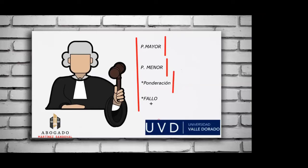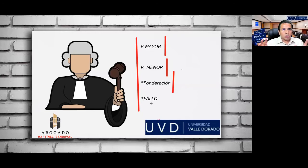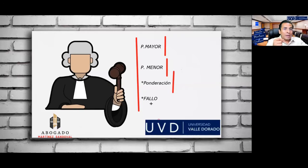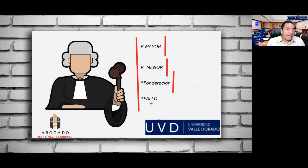Un estudiante pregunta sobre la ponderación y el fallo. El profesor aclara: el fallo es la conclusión. La ponderación implica elementos adicionales a la premisa mayor y menor; el sujeto activo sí privó de la vida al pasivo, pero lo hizo en ejercicio de legítima defensa, se encontraba en peligro su vida. Por lo tanto el juez tiene que cambiar su valoración y a lo mejor absolver al sujeto porque actuó en legítima defensa.